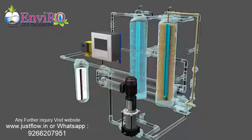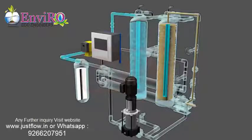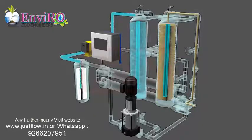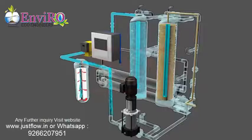Anti-scalant is then dosed into the water with the help of a doser to avoid scaling on membranes. Water is further passed to a micron cartridge filter for fine filtration, then pumped by a high pressure pump into the RO membranes.